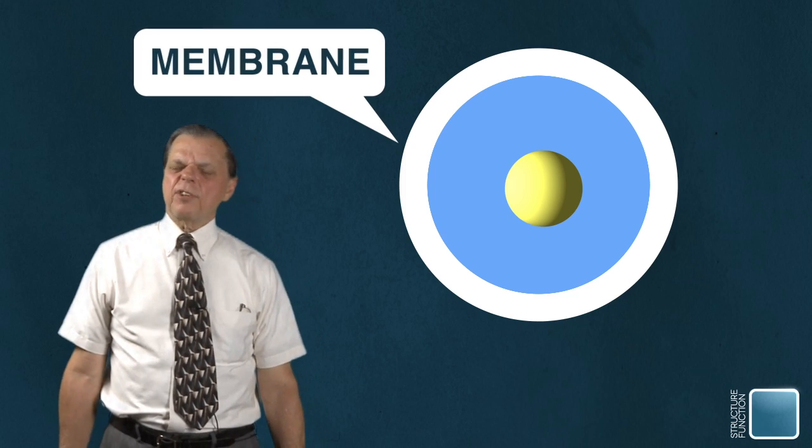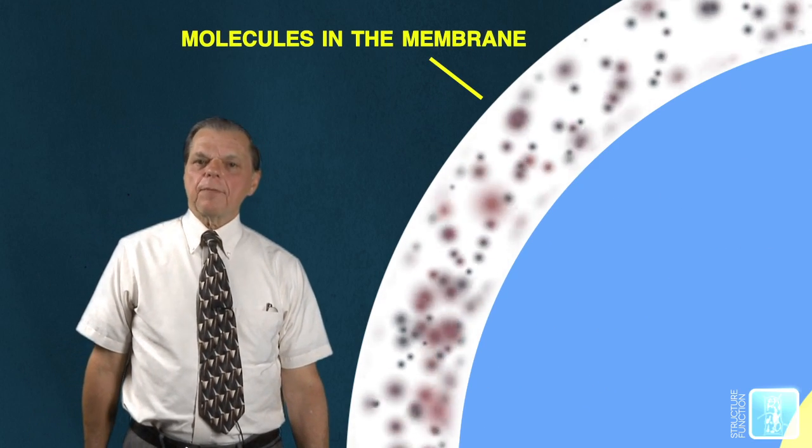So one thing we might want to do is take a look and see what's causing those cells to stick and be taken up. To do that, we look at the membrane that surrounds the cell. And if we do that, we might want to slice into the membrane and look edge on and we see there's all kinds of molecules in there. And each one seems to have a specific function.